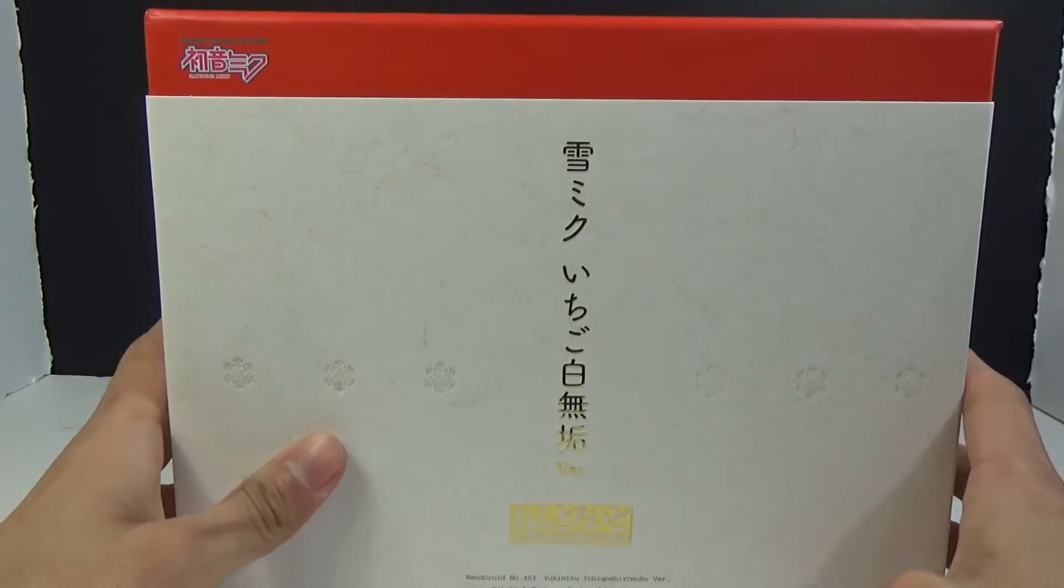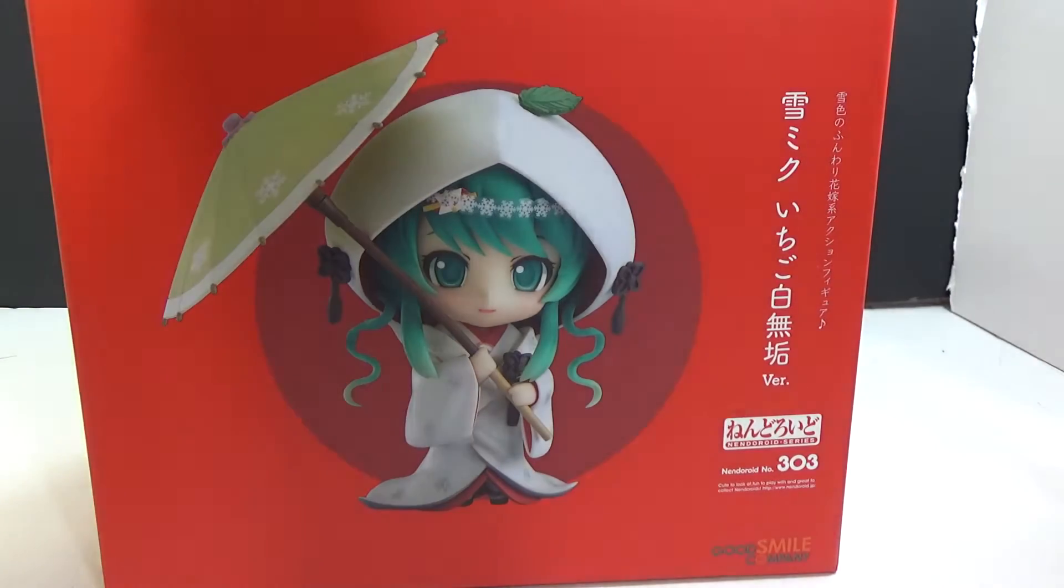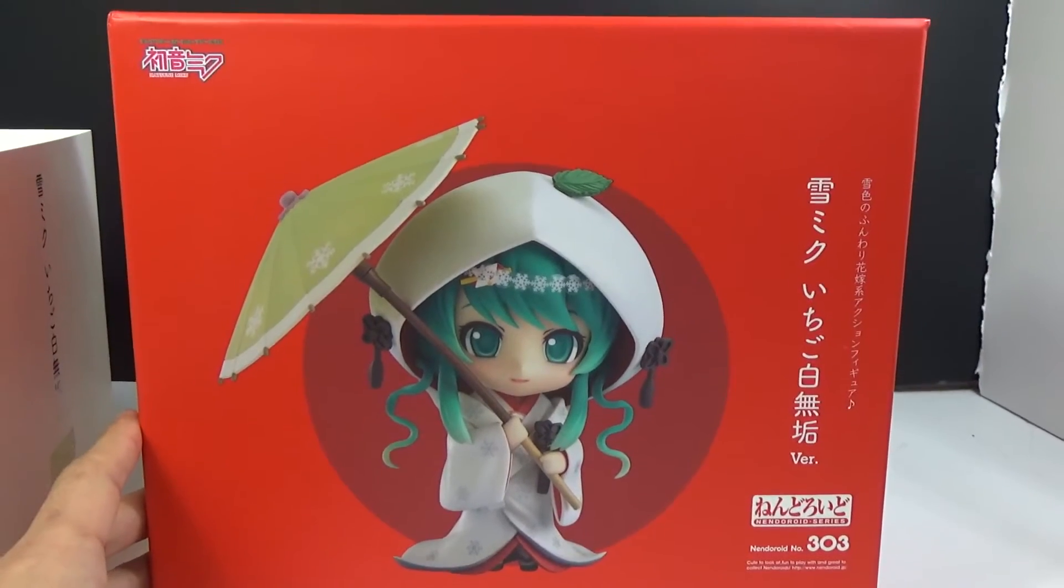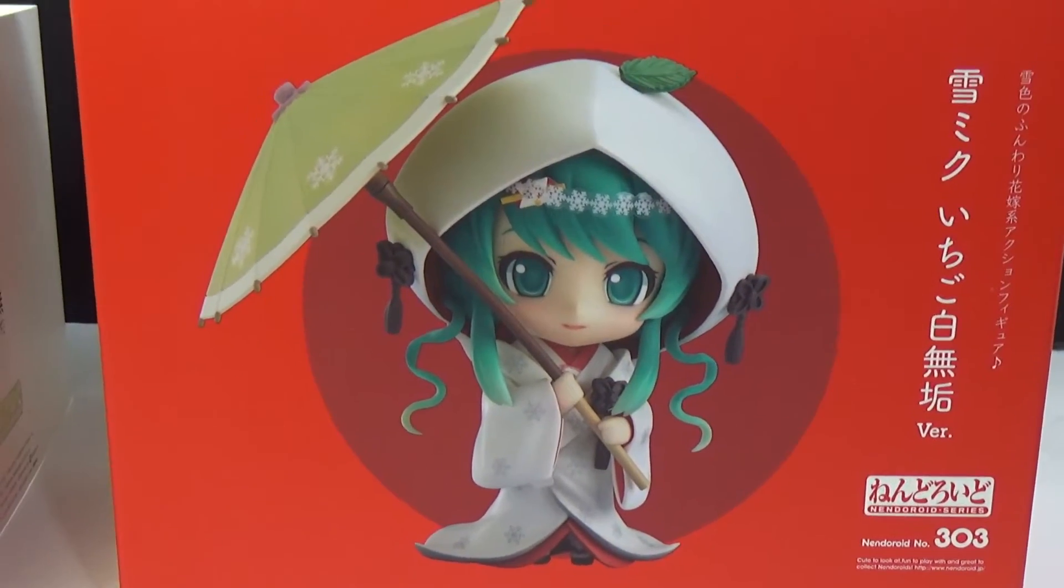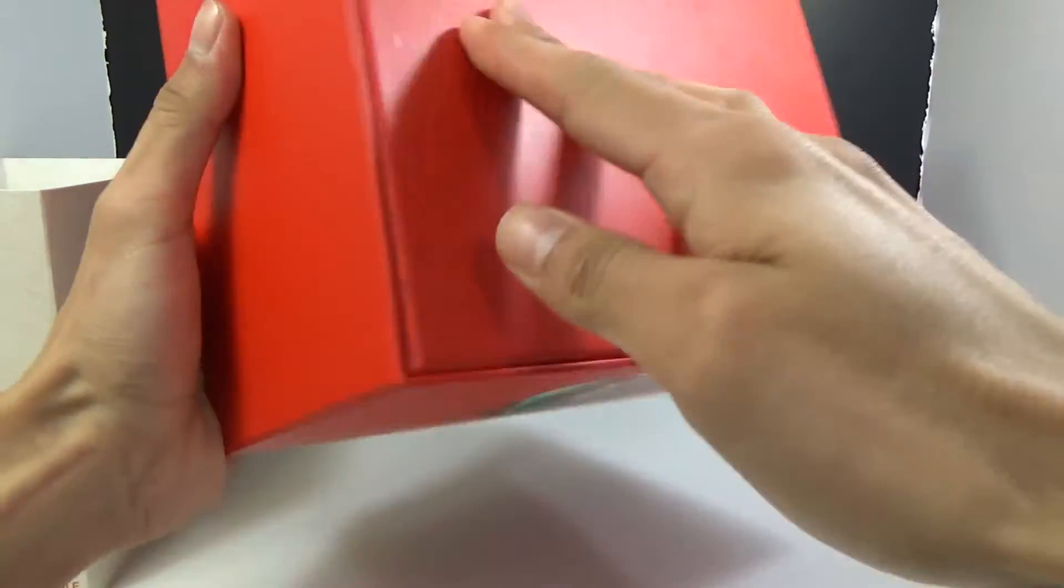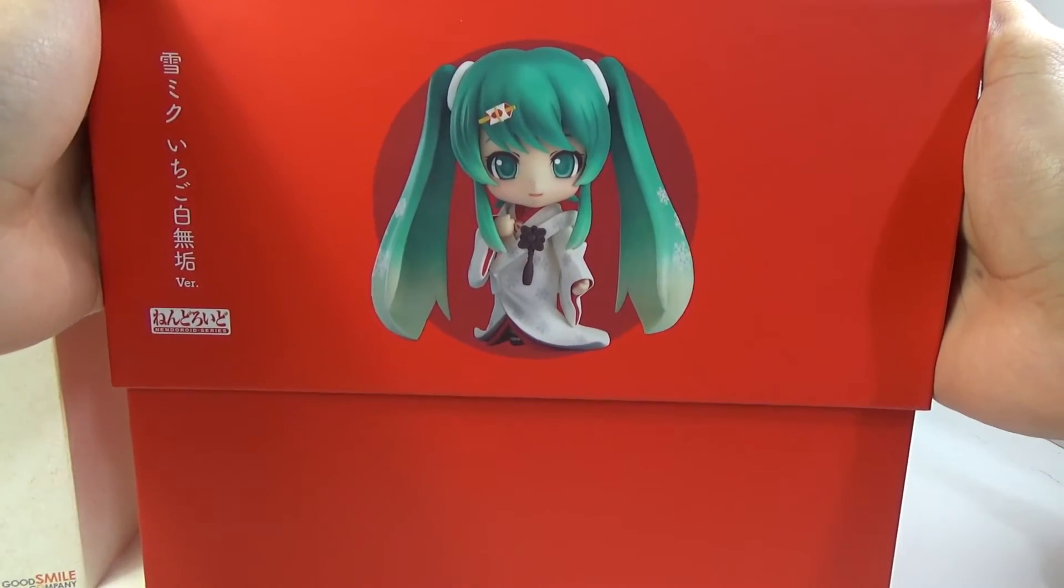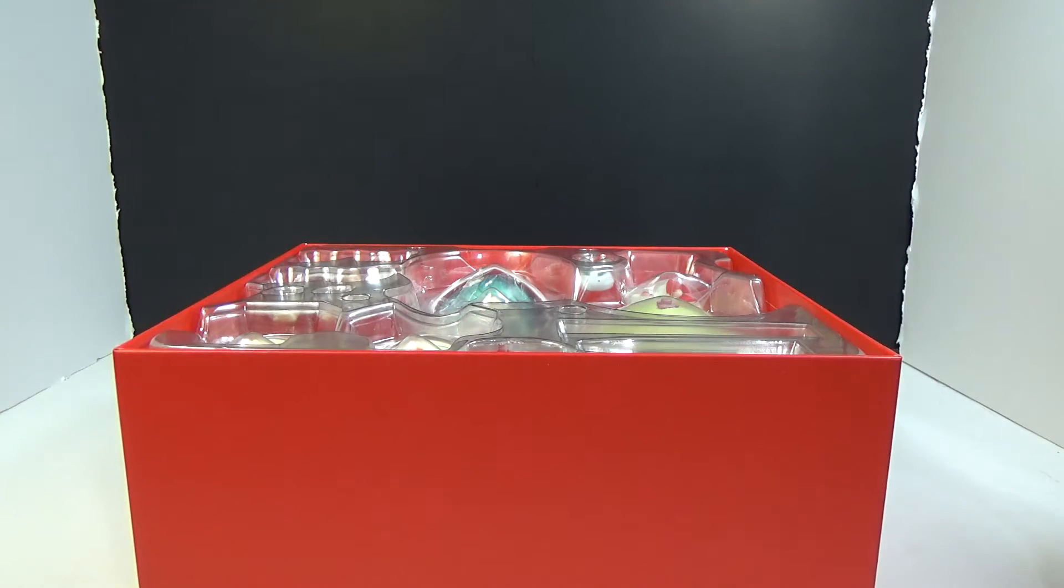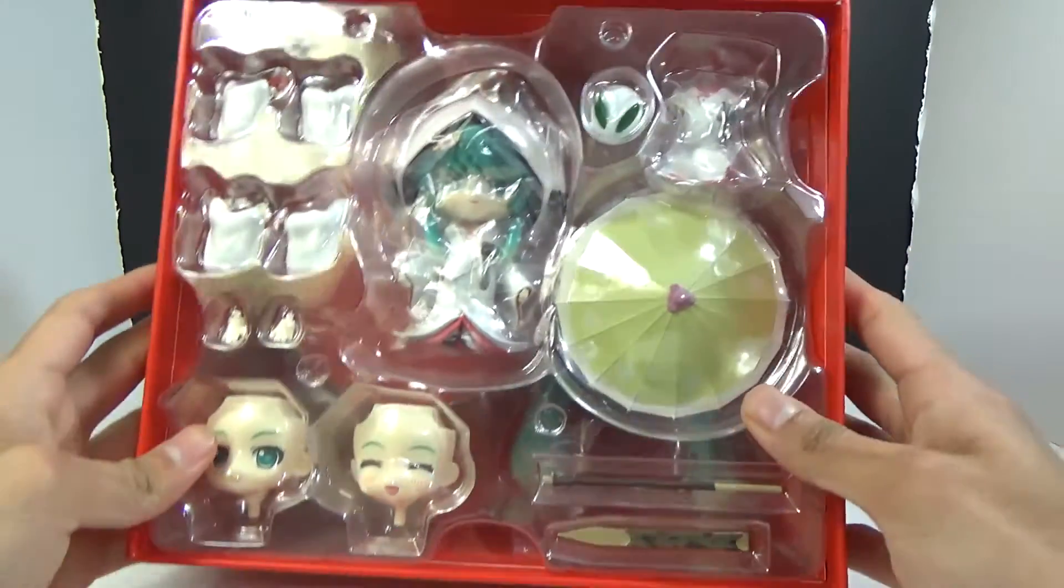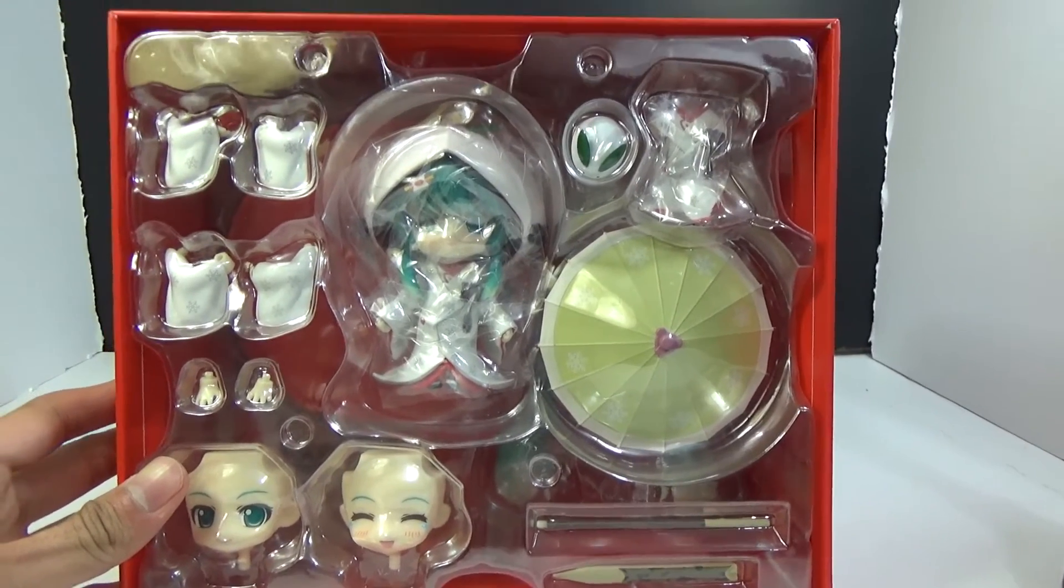This right here is pretty much like a little sleeve that holds the box together. That's the cover behind the sleeve. She's Nendoroid 303. It's a pretty big box and pretty heavy too. Here's her insides. She comes with a crap ton of stuff, so let's get started.